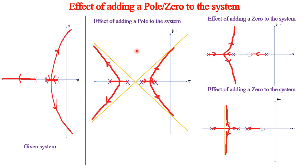Consolidating all observations: when a pole is added, system stability is affected - the unstable system remains unstable. When a zero is added to the right of the rightmost pole, the unstable system becomes stable and transient response improves. When a zero is added between the poles, it further improves stability and transient response compared to adding it on the right. Both zero additions ensure stability, but the position between the poles gives better performance in terms of stability and transient response.